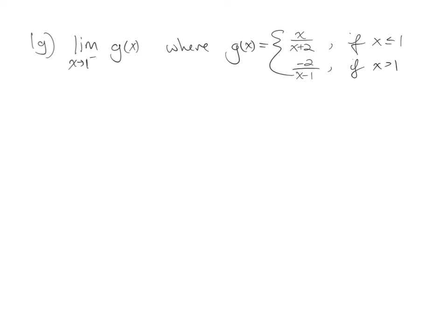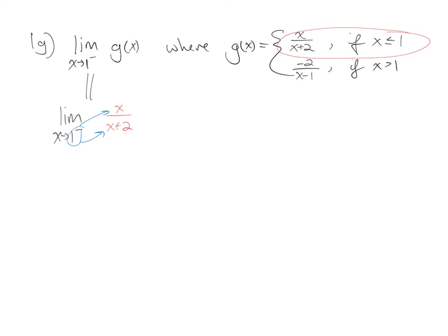In this example, we have a piecewise function and we're trying to find the limit as x approaches 1 from the left of g of x, where g of x equals x over x plus 2 if x is less than or equal to 1, and negative 2 over x minus 1 if x is greater than 1. Since we are approaching 1 from the left, this limit is exactly the same as the limit as x approaches 1 from the left of x over x plus 2, because that part of the function exists to the left of 1. So we can substitute 1 in for x and get a final answer of 1 over 3.